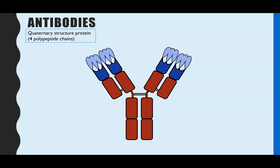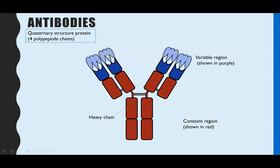Antibodies are proteins with a quaternary structure, made up of four polypeptide chains: two short chains on the outside and two long chains on the inside. The variable region at the top changes in shape and is complementary to a particular antigen — that is where the antigen binds. The constant region remains the same and doesn't change. The longer chains in the middle are called heavy chains because they are longer, while the shorter outer chains are the light chains.